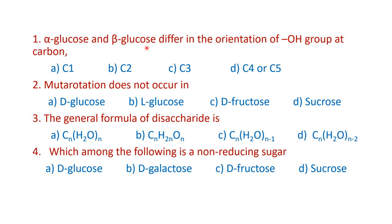The first question is on alpha and beta D glucose. The second question is on mutarotation. The third question is on the molecular formula. The fourth question is on the reducing and non-reducing nature of carbohydrates. We will answer all these questions at the end of this video presentation, after first learning the basics to understand what these terms are.